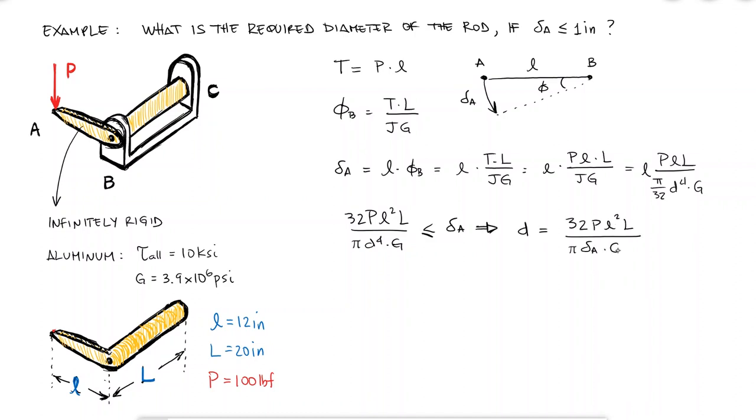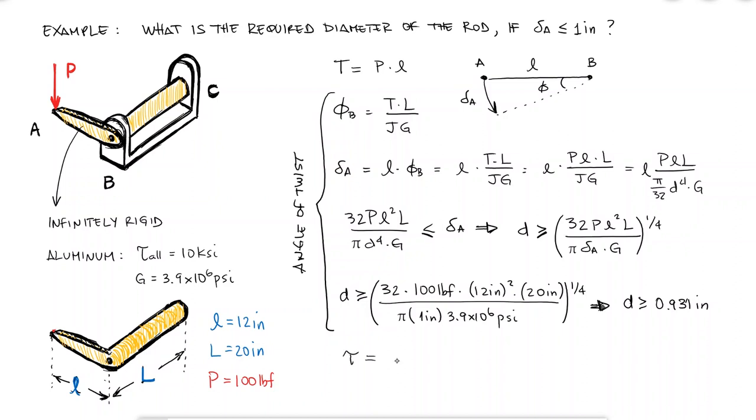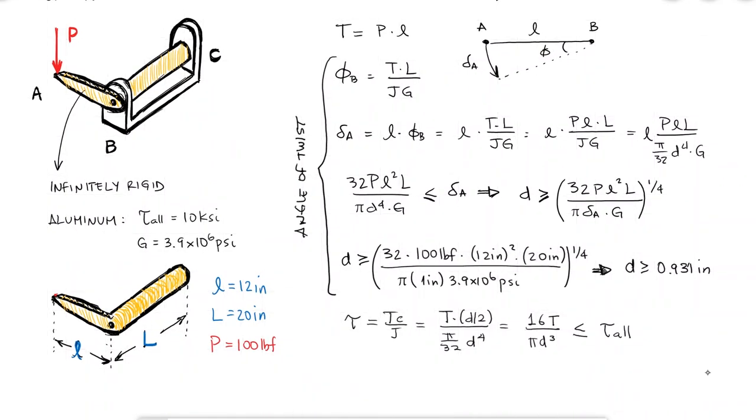However, I need to also make sure that the diameter is large enough that the maximum shearing stresses do not exceed 10 KSI. We know that we can calculate the shearing stresses as Tc over J which for a solid rod always results in 16 T over pi D cubed and I know that that stress at the surface should not exceed the allowable stress. Solving for the diameter, I find that D has to be equal or greater than 0.849 inches.